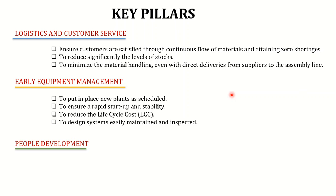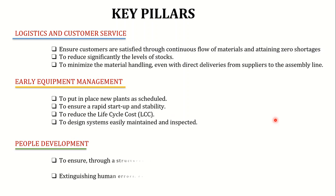The eighth pillar is Early Equipment Management. Key points include reviewing new plant installations to ensure rapid startup and stability, reducing life cycle costs, designing systems that are easily maintained and inspected. The bathtub curve tells us that equipment tends to fail initially when first purchased. We also want equipment with flexibility to produce multiple designs or products from one machine. The design department should work alongside the maintenance department so new equipment is purchased in a way that is easy to maintain and flexible for production.